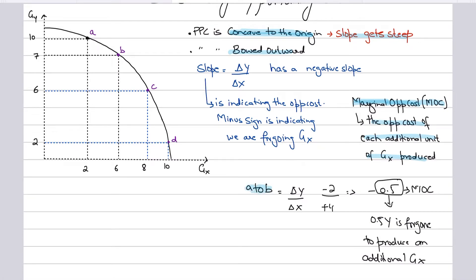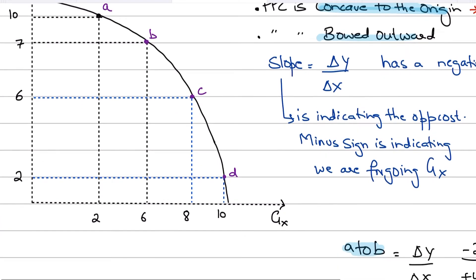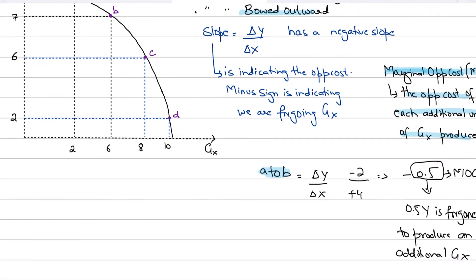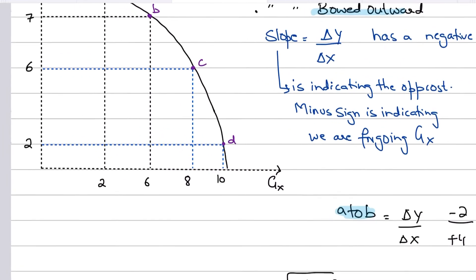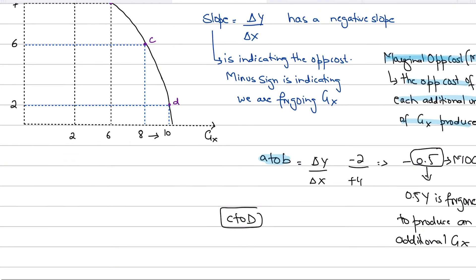Now let's see what is going to happen if you go down the curve into a steeper region. Let's see what would happen when you move from point C to point D. If you move from C to D, the change in good X is much less — only two more units of good X are being produced — while four units of good Y are actually foregone in order to produce those two more units of good X. This is clearly indicating a situation of increasing opportunity cost.